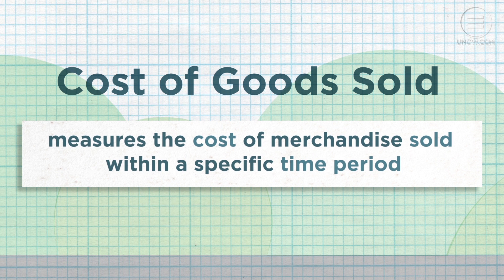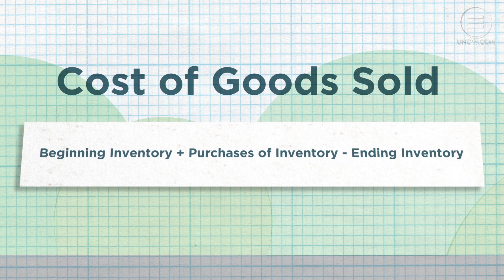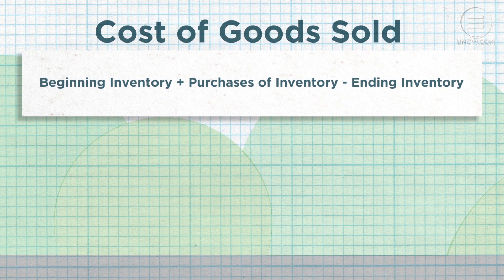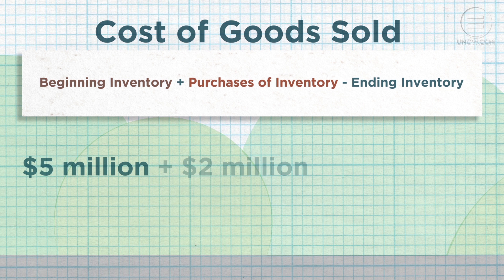Let's talk more about cost of goods sold. This is an accounting equation that measures the cost of the merchandise that an organization has sold within a specific time period. You first determine the cost of the merchandise you started with, add anything you purchased, and subtract the cost of what you currently have. The resulting figure is the cost of goods sold.